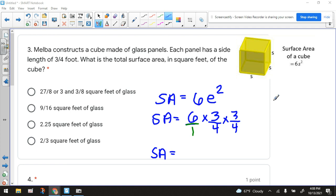Melba constructs a cube made of glass panels. Each panel has a side length of three-fourths of a foot. What is the total surface area in square feet of the cube?